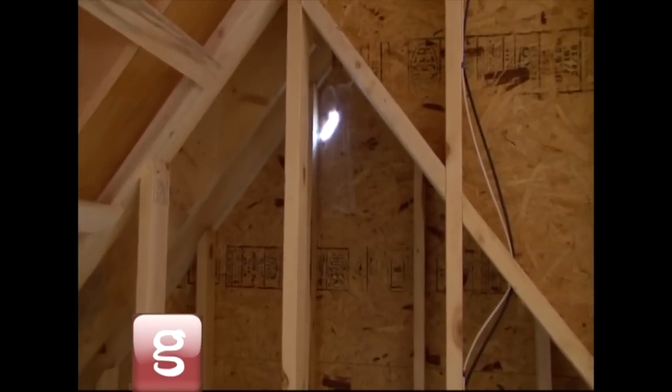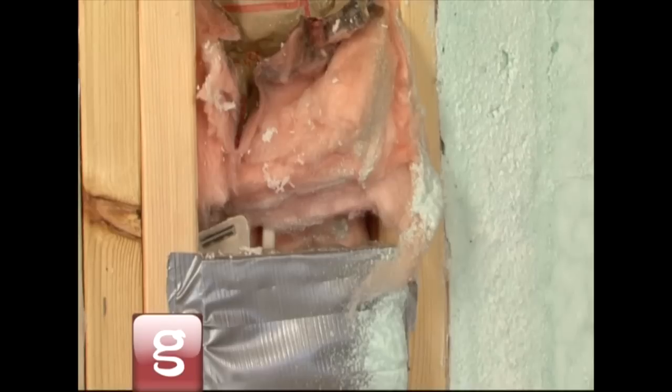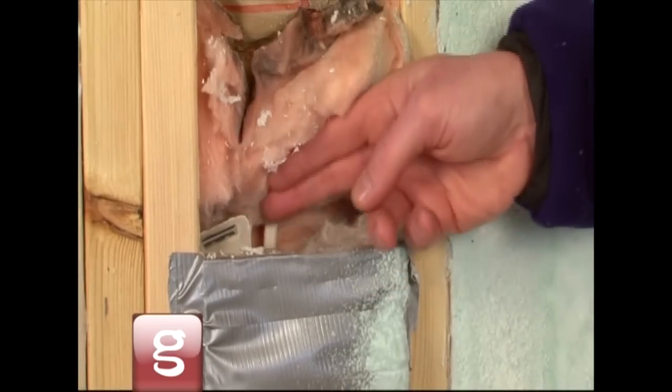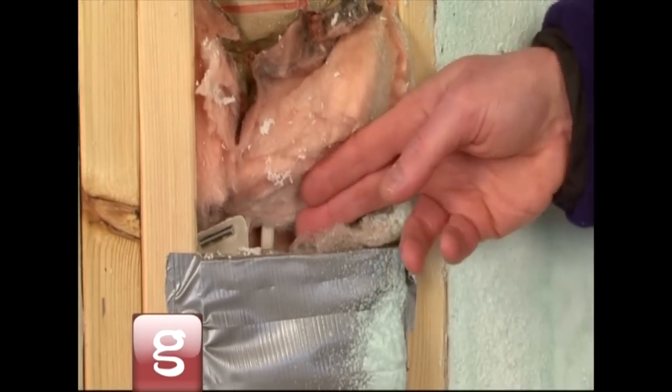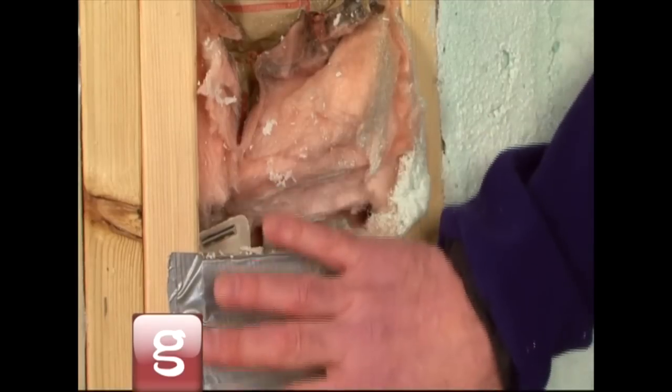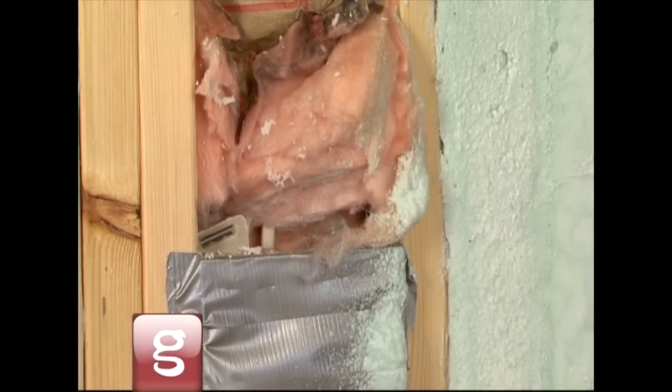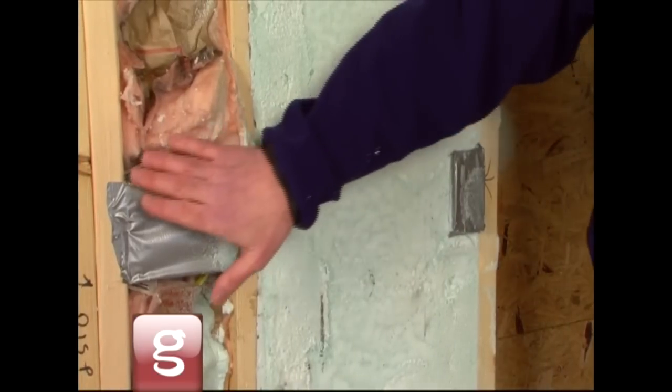The secret to energy efficiency is simple: keep the outside air out and the inside air in. Unfortunately, air can travel through even the smallest cracks, holes, or seams. Even with traditional fiberglass insulation, air easily passes through the spaces between the wall studs and the insulation bats, reducing the effective R-value of the assembly.